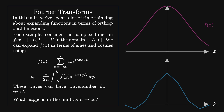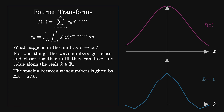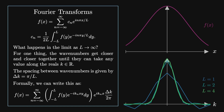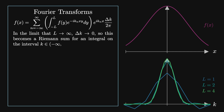What happens in the limit as l goes to infinity? The wave numbers get closer and closer together until they can take any value along the real line. The spacing between the wave numbers is given by delta k equals pi over l. Formally, we can write this as f of x equals the sum from minus infinity to infinity of the integral from minus l to l of f of y times e to the minus i k_n y dy, times e to the i k_n x times delta k over 2 pi. We have used the identity 1 over 2l equals delta k over 2 pi. In the limit that l goes to infinity, delta k goes to zero, so this becomes a Riemann sum for an integral over the real line.